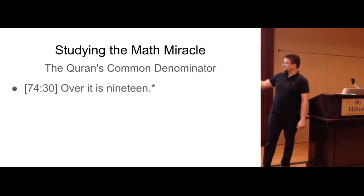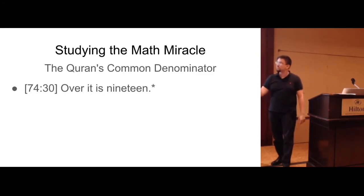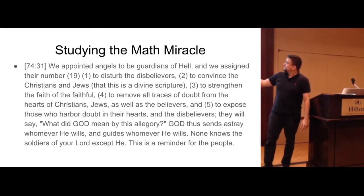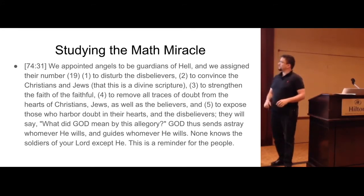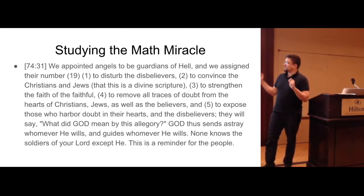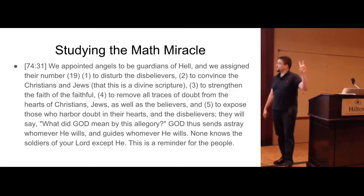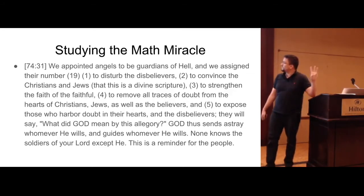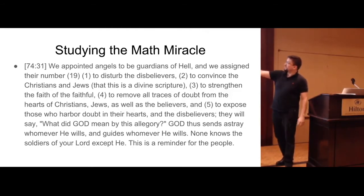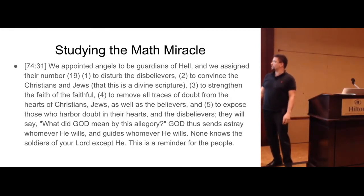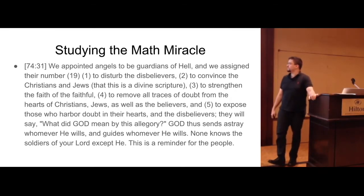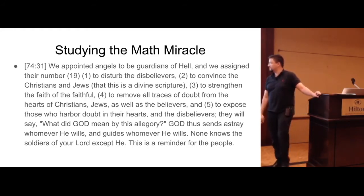Studying the miracle. Now, of course, we have to go over this, right? 74:30. Over it is 19. It's the Quran's common denominator. 74:31. We have appointed angels to be the guardians of hell, and we assigned their number. Now, we're going to go over this, because, again, the point of this, talking about large numbers, is to appreciate God's immense omnipotence, immense mercy and power. So, one, function of the math miracle. Disturb the disbelievers. Two, convince the Christians and Jews that this is a divine scripture. Three, strengthen the faith of the faithful. Four, and the emphasis on this, remove all traces of doubt from the hearts of the Christians, Jews, as well as the believers. This is huge. This will be emphasized a lot, inshallah. And five, to expose those who harbor doubts in their hearts. And the disbelievers, they will say, what did God mean by this allegory? God thus sends astray whomever he wills and guides whomever he wills. None knows the soldiers of your Lord except he. This is a reminder for the people.